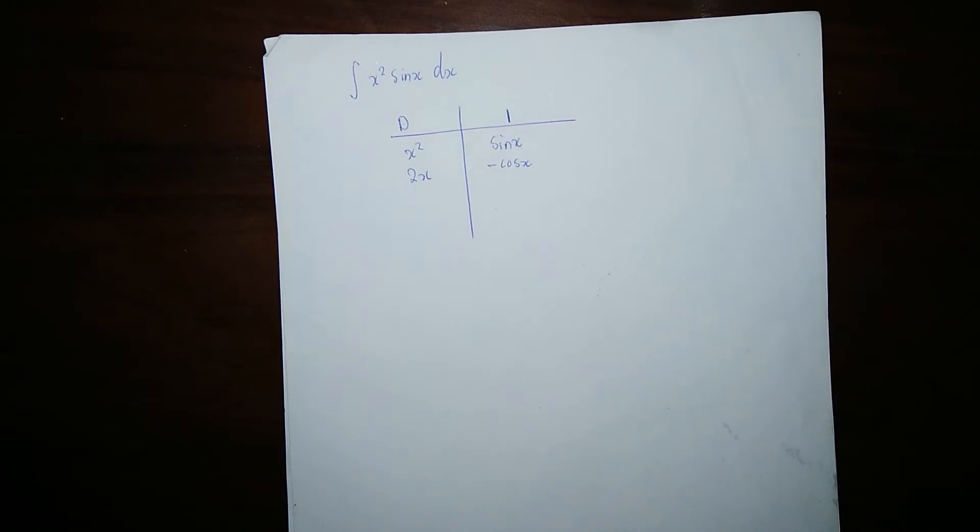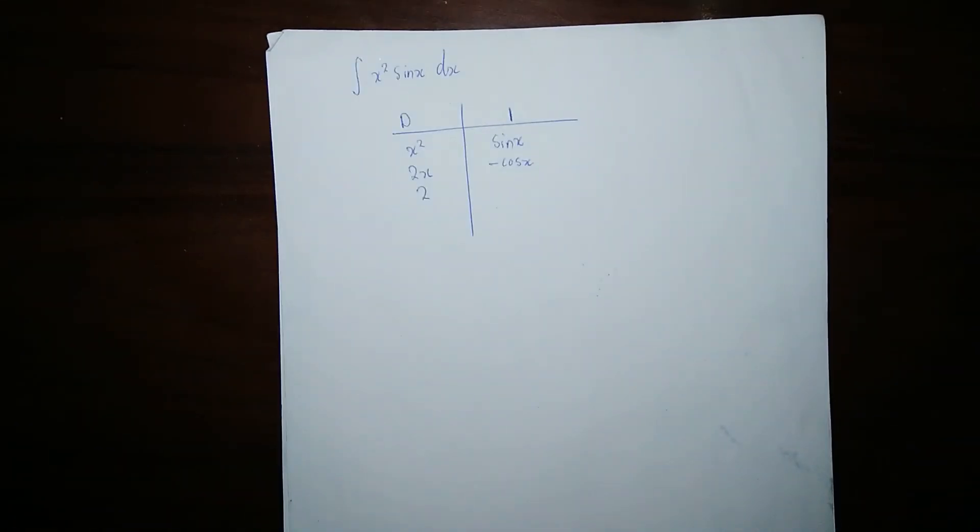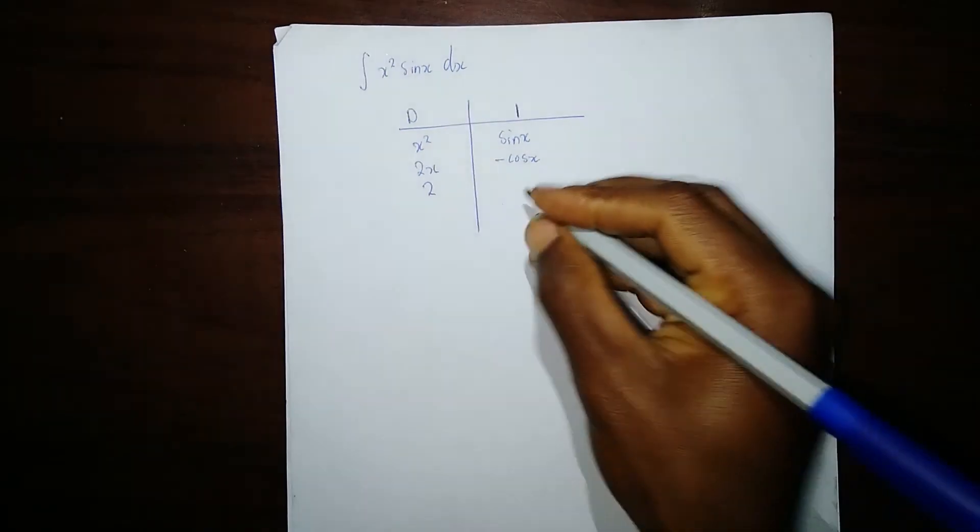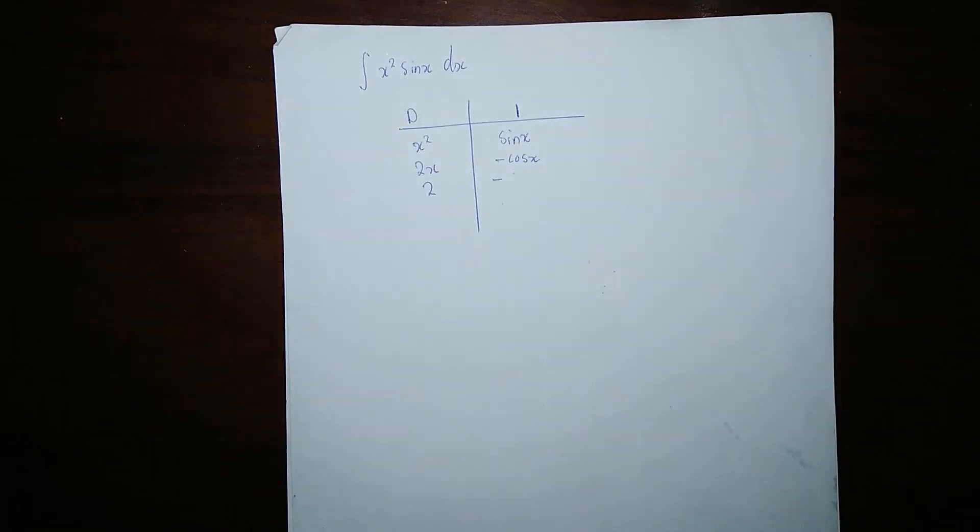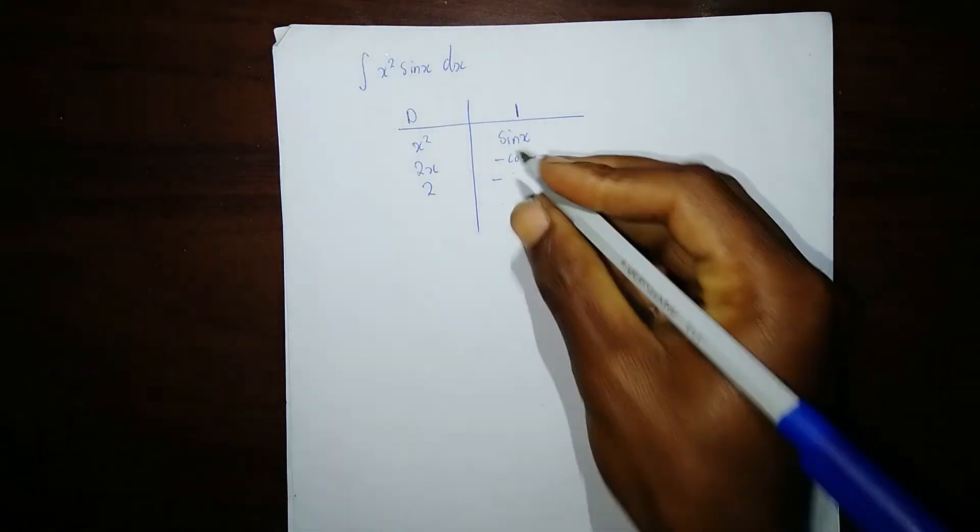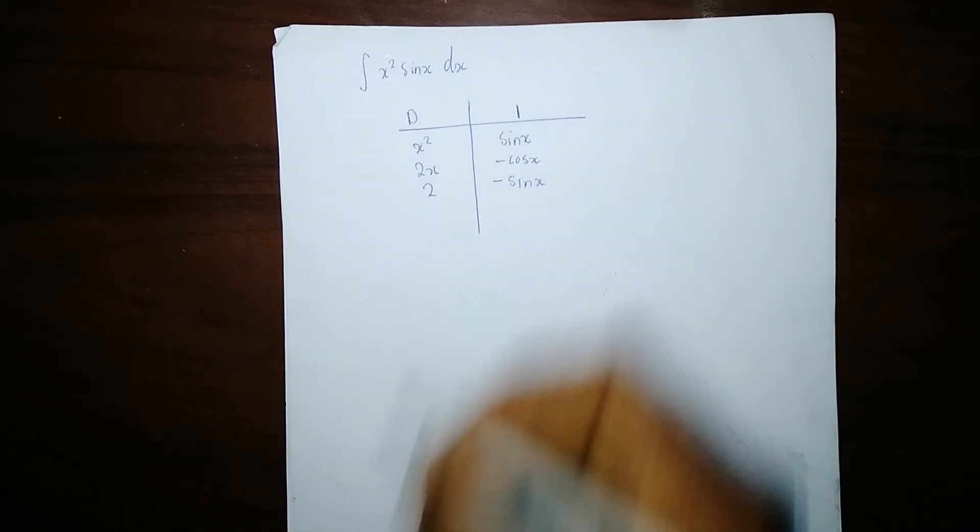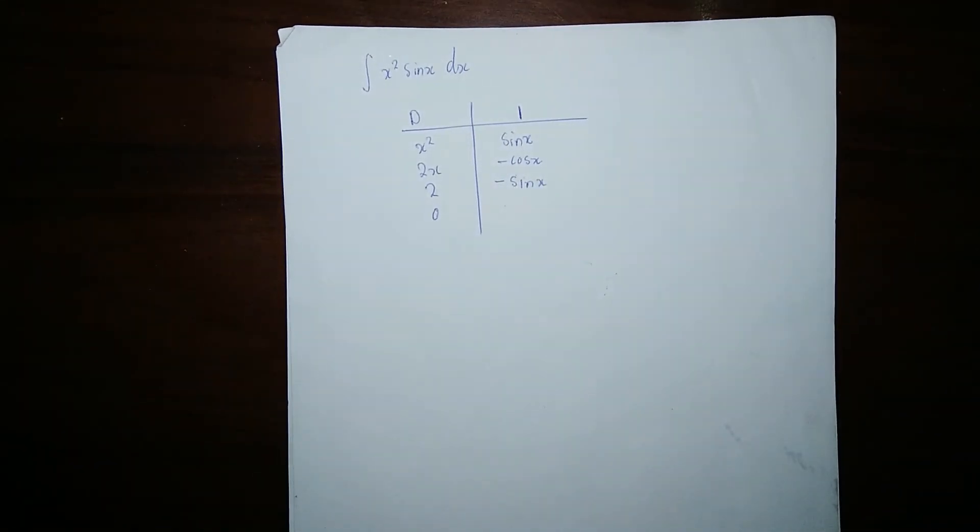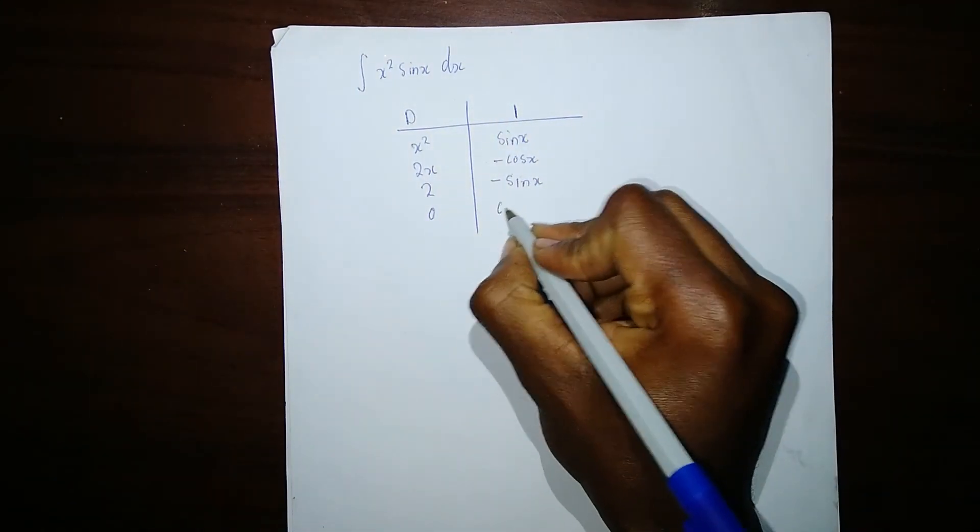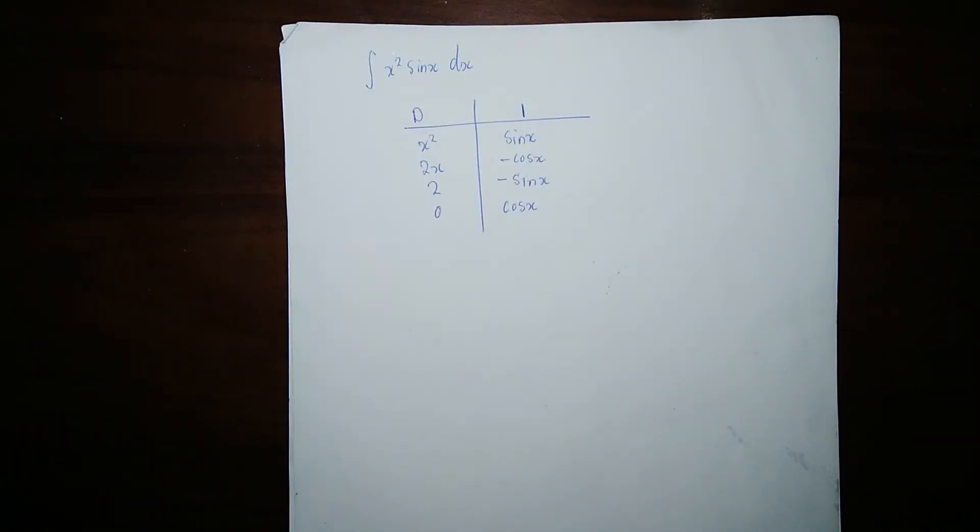You differentiate 2x, you get 2. You integrate negative cos(x), you get negative sin(x). You differentiate 2, you get zero. You integrate negative sin(x), you get cos(x).